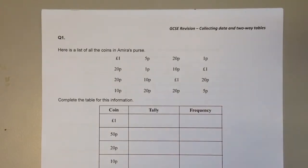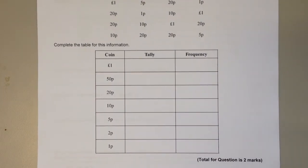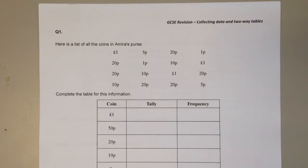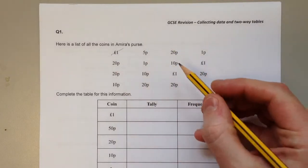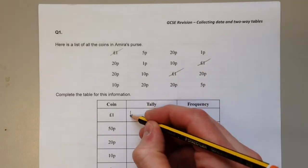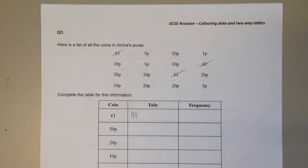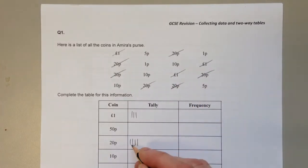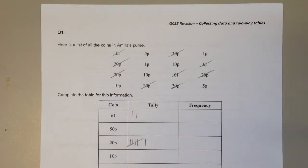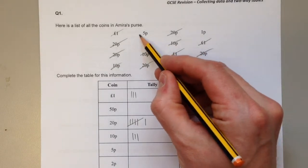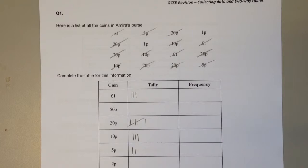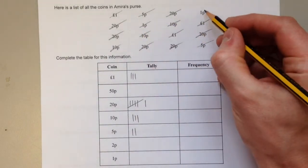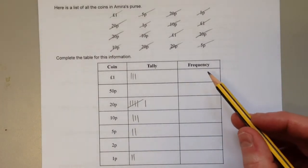These are solutions to the GCSE revision worksheet on collecting data and two-way tables. Question one: we have a list of coins in a purse and we need to complete the tally chart. Go through all your values one at a time and cross them off as you tally them so you don't repeat anything. There are three one-pounds, no 50 pences, six 20 pences — remember the fifth tally is a diagonal bar — three 10 pences, two 5 pences, no 2 pences, and two 1 pences.